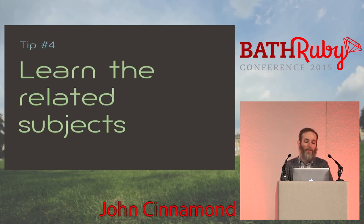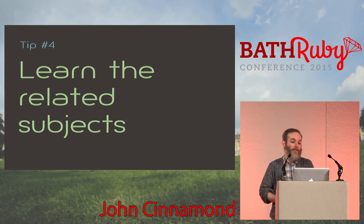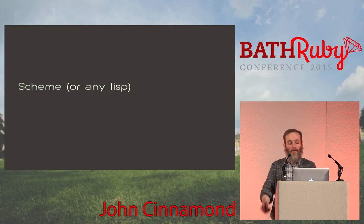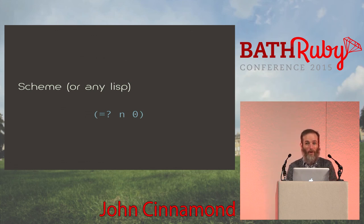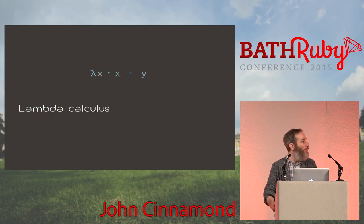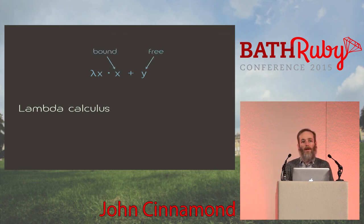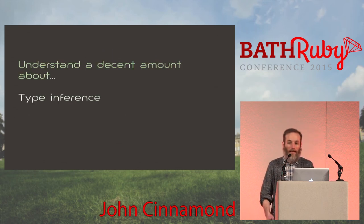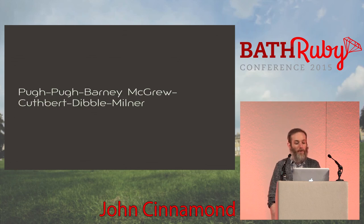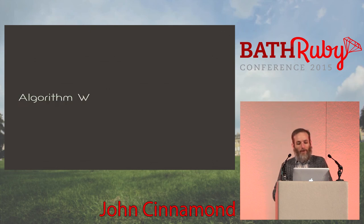The next tip is by far the hardest: learn related subjects. This paper wasn't created in a vacuum — there's a whole world of other research behind it. To understand the paper you need to understand some of those things. You need a little bit of Scheme or another Lisp — just enough to read an S-expression and understand conditionals. You need a little bit of lambda calculus — just enough to know what a function definition looks like and the difference between free and bound variables. But you need to know quite a lot about type inference, specifically Hindley-Milner type inference — also known as Damas-Milner, or algorithm W — before you can hope to get anything out of the soft typing paper.